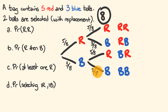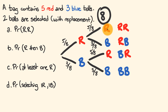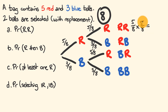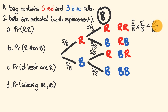Now we can work out the probability of each outcome by following along the tree. For red then red: the probability of red first is 5/8 and red second is also 5/8. To get the total probability we multiply: 5/8 × 5/8 = 25/64. So the probability of getting a red then a red is 25/64.